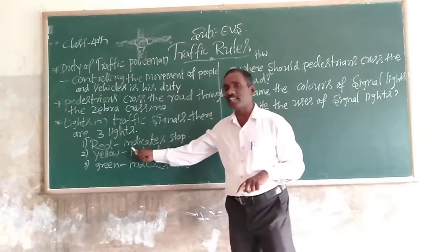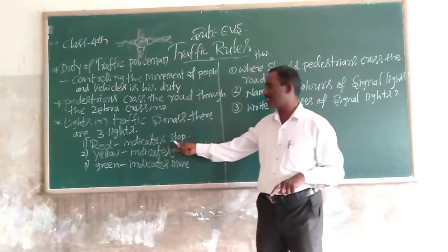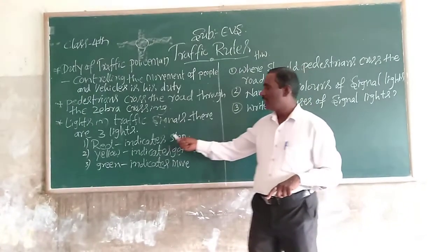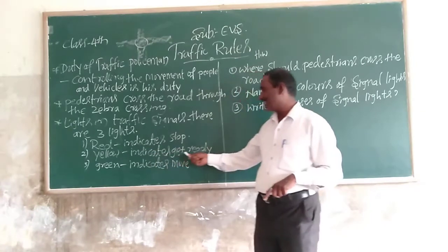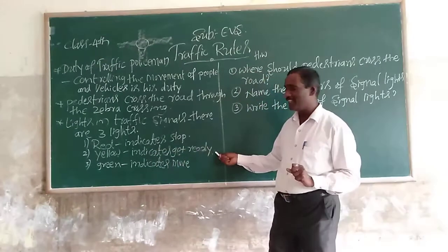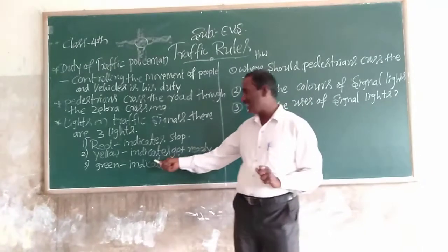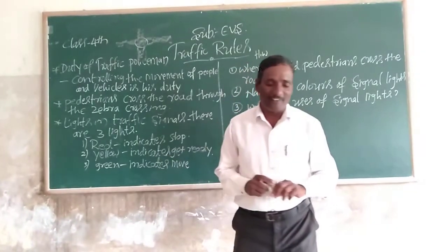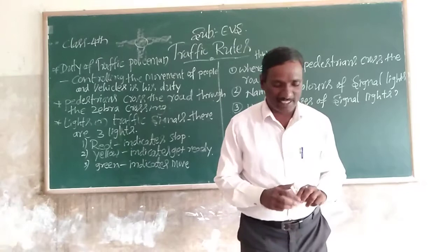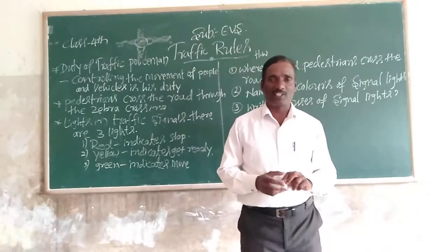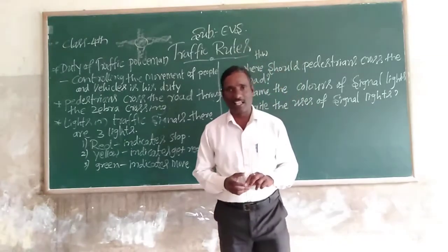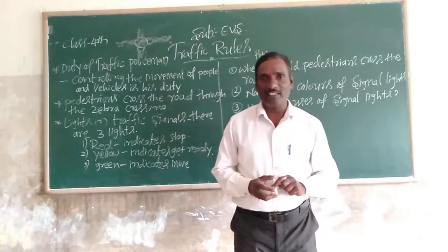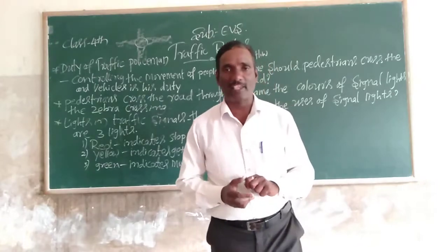Red light indicates stop. Yellow light indicates get ready. Green light indicates move the vehicles. We shall stop here for this class. Understood? Thank you, students.